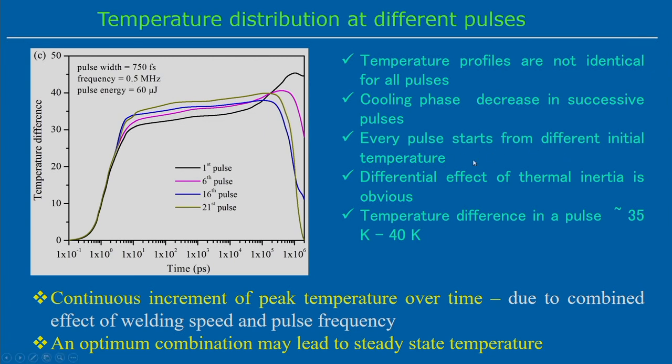Temperature distribution at different pulses — such as the 1st, 16th, and 21st pulses — shows that profiles are not exactly identical for all pulses. Cooling phase decreases in successive pulses due to heat accumulation. Each pulse starts from a different initial temperature. Therefore, the differential effect of thermal inertia is obvious — all pulses do not behave identically in terms of temperature distribution. Temperature differences within a single pulse are around 35–40 Kelvin.